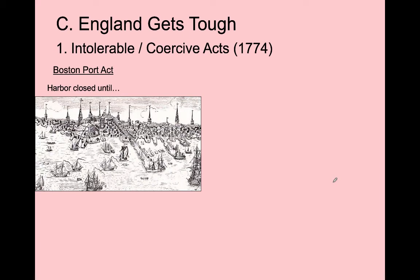England responds to all this defiance—the Committees of Correspondence, the Sons of Liberty's violence, and the dumping of tea—by passing the Coercive Acts in 1774. 'To coerce' means to force someone to do something they don't want to do. There are several of these acts. Sam Adams and the Sons of Liberty rename them the Intolerable Acts, since 'intolerable' means horrible and unbearable—a better name for getting people angry. England calls them the Coercive Acts; America calls them the Intolerable Acts.